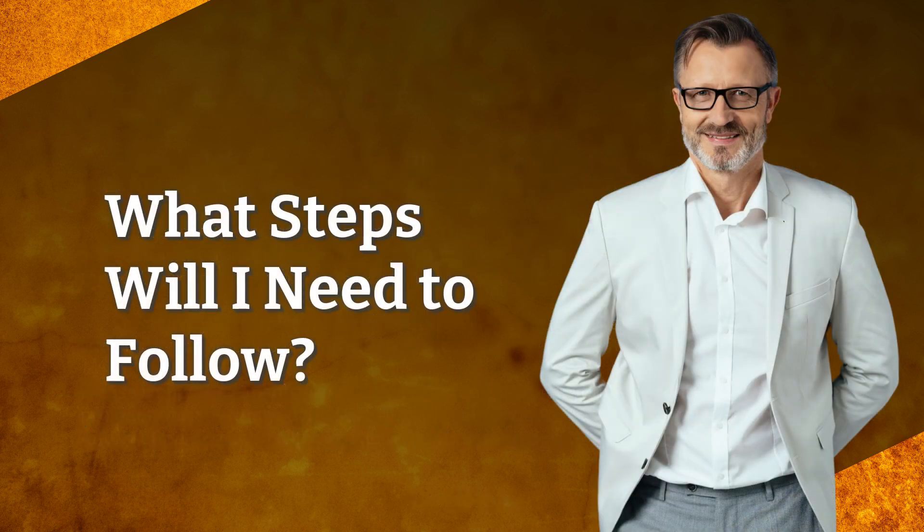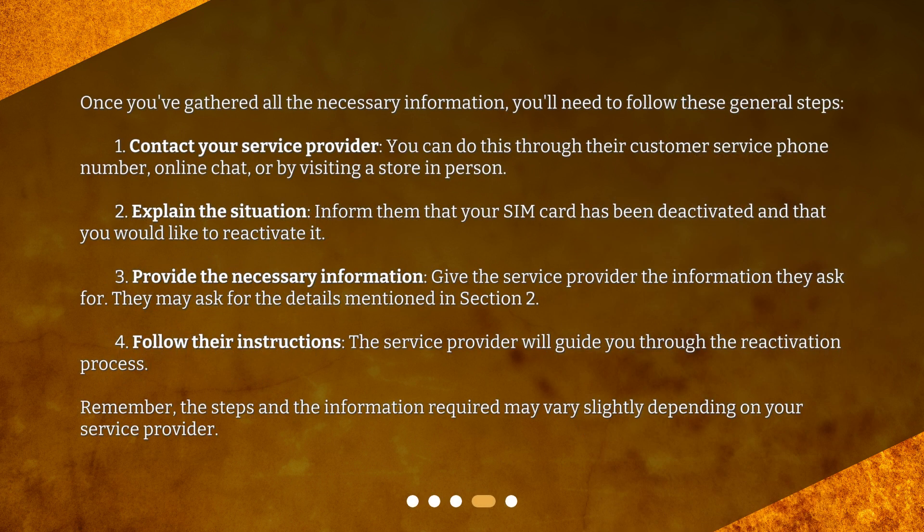What steps will I need to follow? Once you've gathered all the necessary information, you'll need to follow these general steps. 1. Contact your service provider — you can do this through their customer service phone number, online chat, or by visiting a store in person. 2. Explain the situation — inform them that your SIM card has been deactivated and that you would like to reactivate it. 3. Provide the necessary information — give the service provider the information they ask for. They may ask for the details mentioned in the previous section.